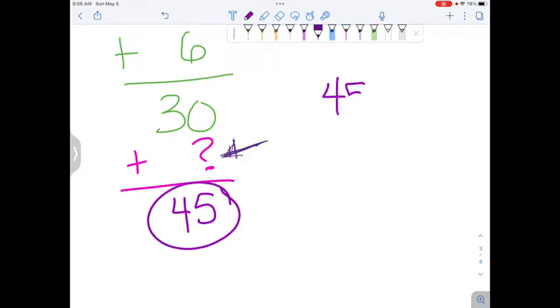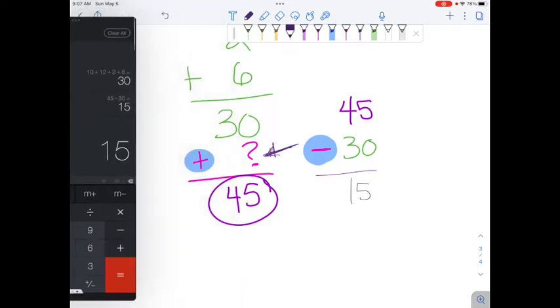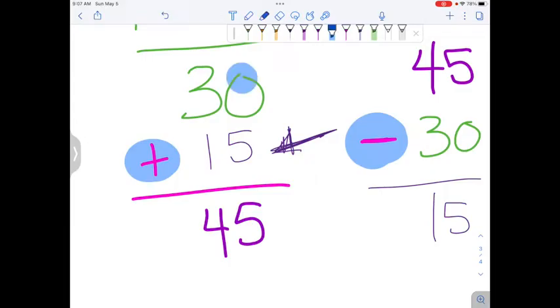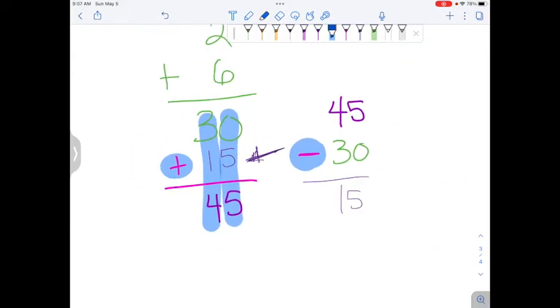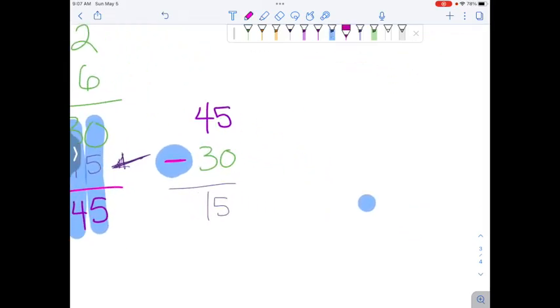If you have an unknown in a problem, you can turn this around, use the inverse operation, and take this bottom number, 45, start with that number, and subtract, which is the opposite of plus, the number you do know. So this problem becomes 45 subtract 30. 45 minus 30 is 15. This should be the missing number. I'm going to put in a 15, and see if this works. Yeah, that looks like it works. So our missing number should be 15. Question mark equals 15.